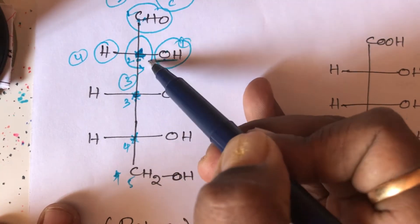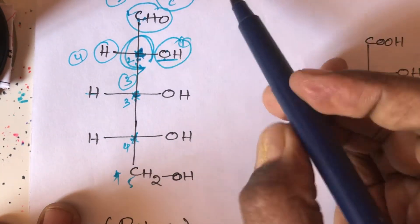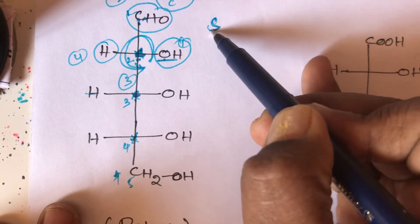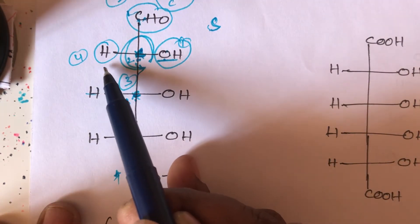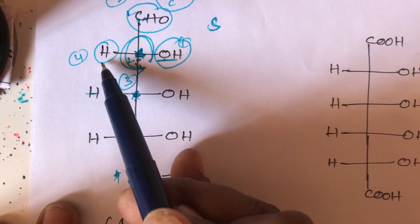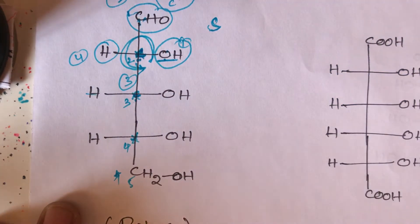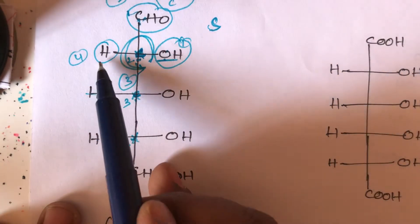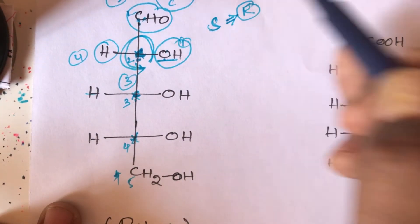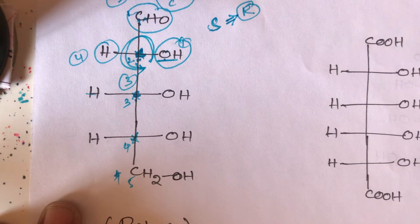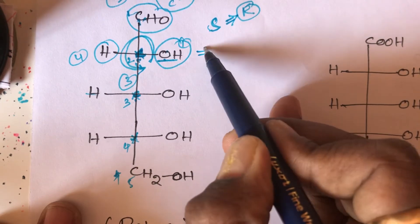The direction 1→2→3 is anticlockwise, which normally means S configuration. However, the least priority group — hydrogen — is present on the horizontal line. When the least priority group is on the horizontal line, S configuration becomes R and R configuration becomes S. Therefore, the second carbon has a 2R configuration.